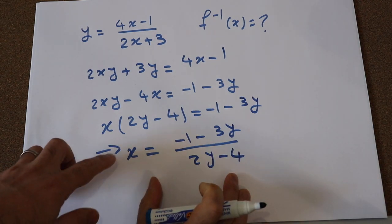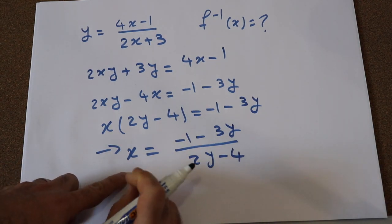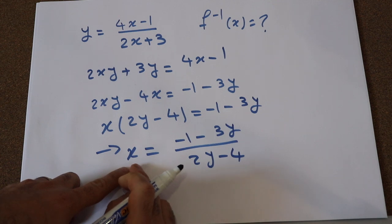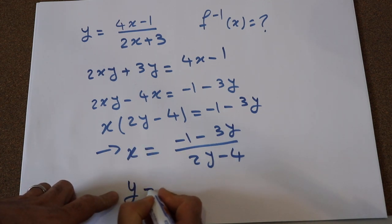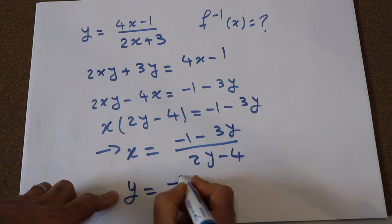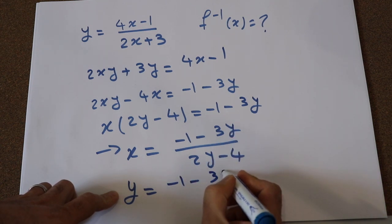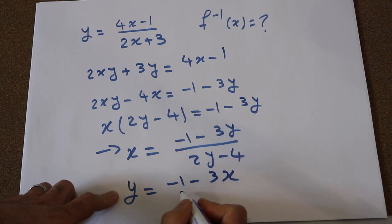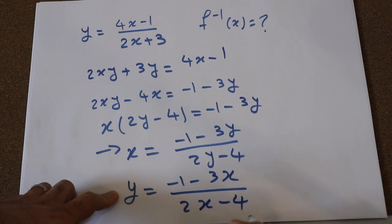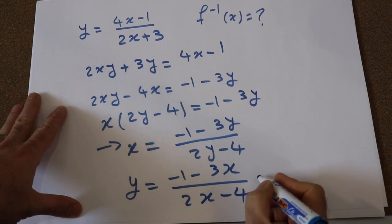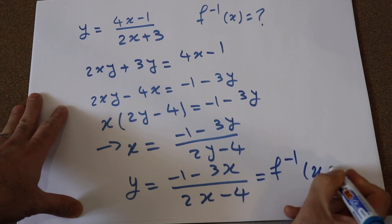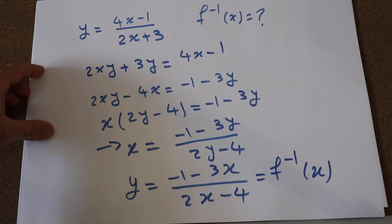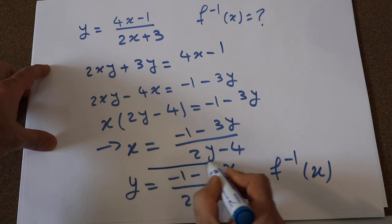Therefore, x will be equal to (minus 1 minus 3y) divided by (2y minus 4). That is step one. Step two is to interchange x and y: wherever you see x, change it to y, and wherever you see y, change it to x. The result is y equals (minus 1 minus 3x) divided by (2x minus 4), and this is the inverse of the function.